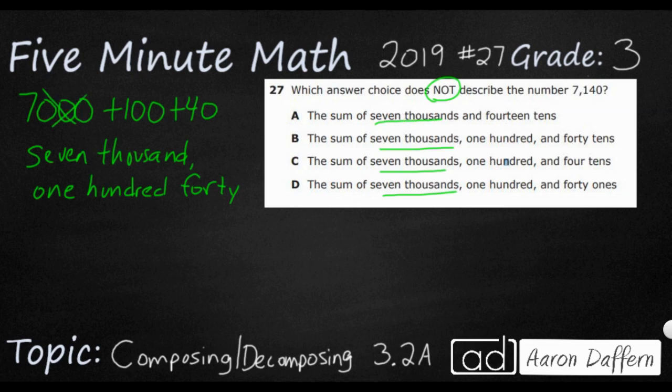The trick is in the 100 and the 40. All answer choices have 100, so we're really just looking at how each one represents 40. We've got 40 tens, 4 tens, 40, and 40 ones.